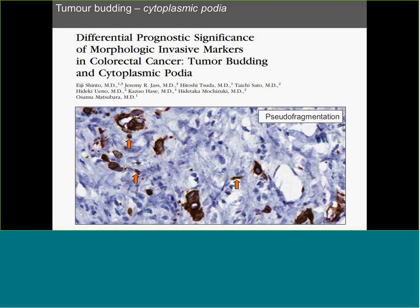A fascinating study from Japan looked at tumor budding cases, did cytokeratin staining, and performed up to 200 serial sections through the block. They identified that many of those tumor buds had little pseudofragments. Next time you do a cytokeratin stain, look for them — they are not artifacts but are in fact the tip of the iceberg that the tumor bud denotes as it leaves the invasive tumor.